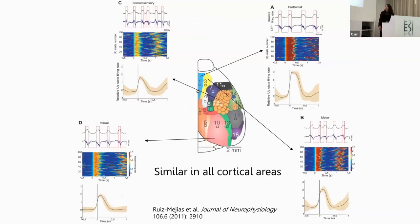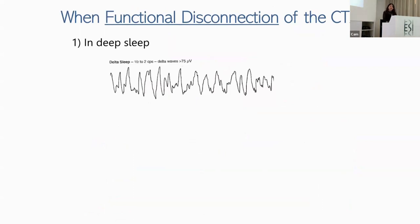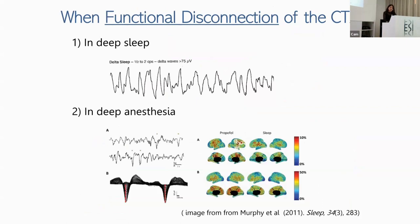We have recorded up and down states in different areas. They are very similar across areas, with only small differences. Interestingly, they appear whenever there is a functional disconnection of the cortex — in deep sleep but also in deep anesthesia. A study by Murphy et al. comparing sleep and deep anesthesia found the slow waves have many things in common, though there can be some differences across anesthetics. The similarity will depend on the level of anesthesia.